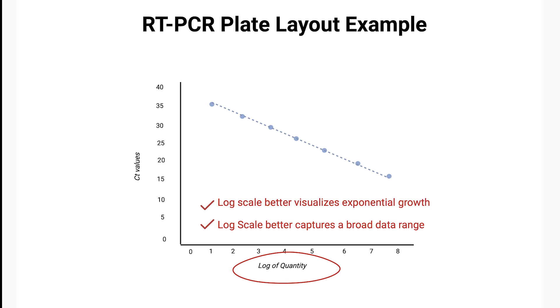Once we have our data points plotted, the next step is performing a linear regression analysis. This gives us the best fit line through the data, represented by the equation y equals mx plus b, where m is the slope and b is the y-intercept.